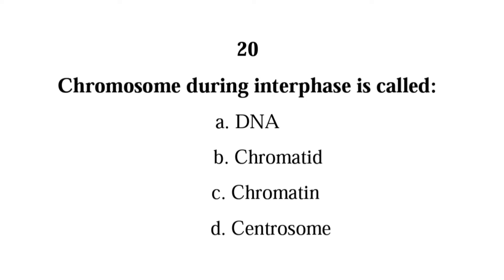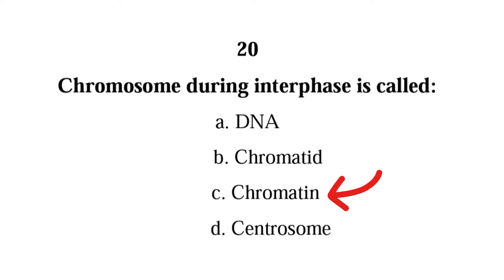Number twenty: a chromosome during interphase is called — DNA, chromatid, chromatin, or centrozone. The correct answer is C, chromatin. Chromatin is a highly coiled form of chromosome that is seen during interphase.